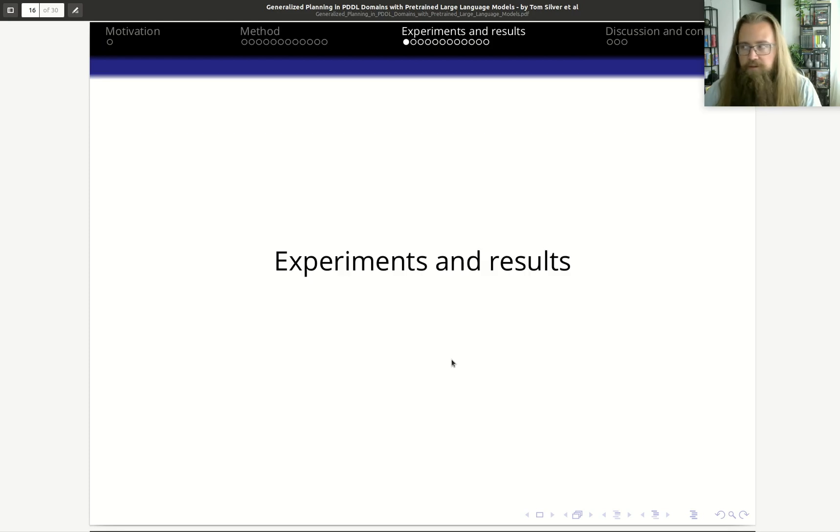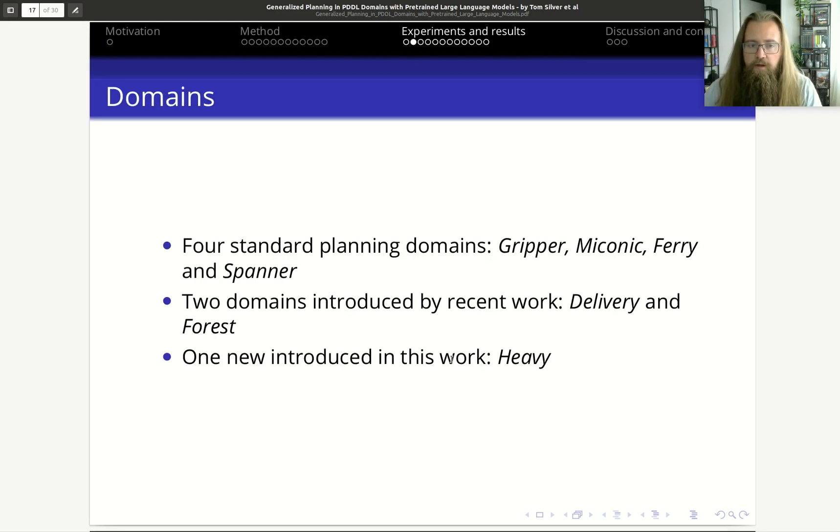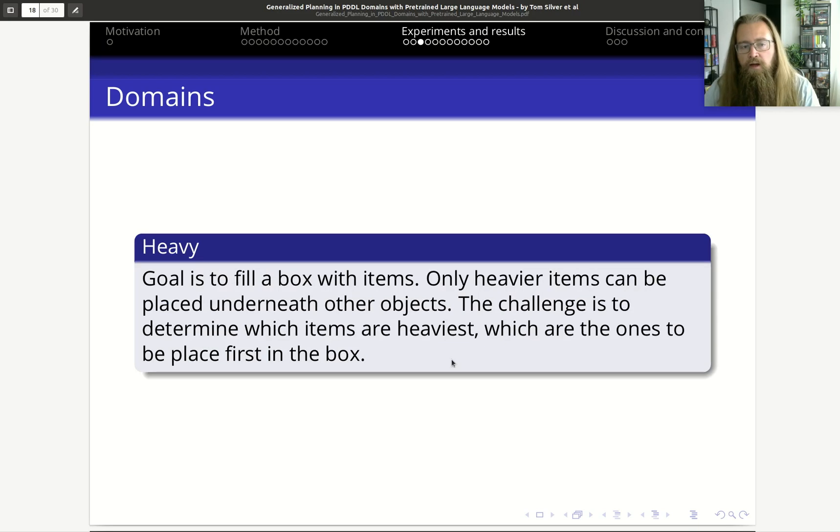Now for the experiments and results. They use these four standard planning domains: the Gripper, Miconic, Ferry, and Spanner. They use two domains introduced by recent work, which is Delivery and Forest, and also introduce one new one, which is Heavy. The Heavy domain is to fill a box with items where only heavier items can be underneath, so you cannot place a heavier item on top of a lighter item.